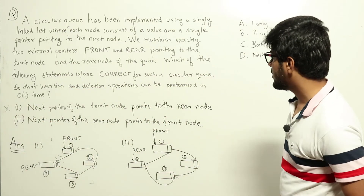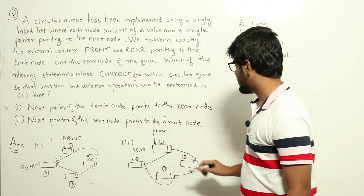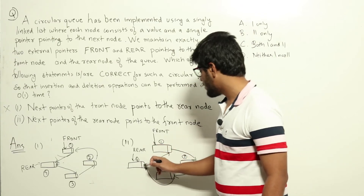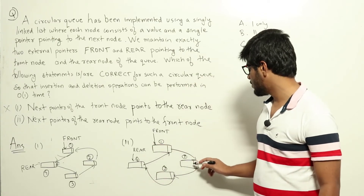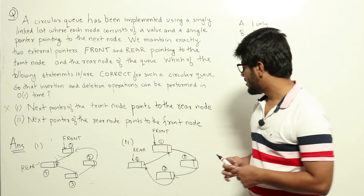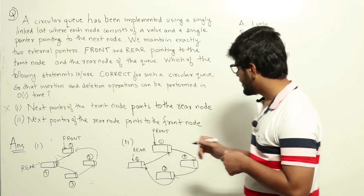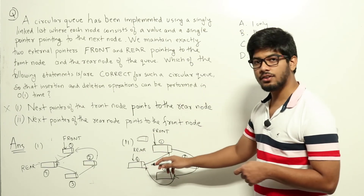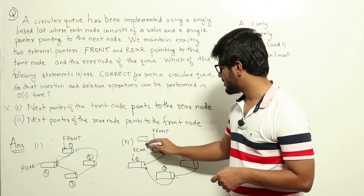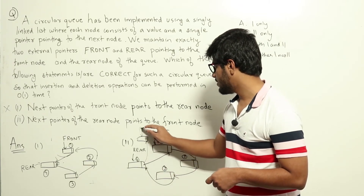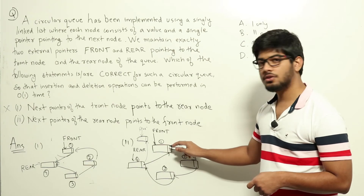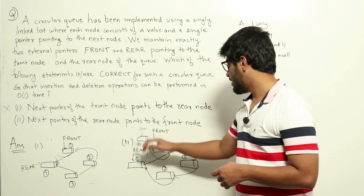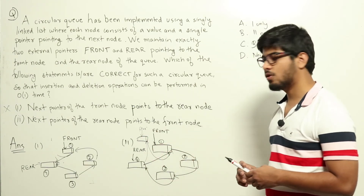Now let's look at statement 2: next pointer of the rear node points to the front node. Again we have four nodes. The rear node's next points to the front node, the front node's next points to node two, node two to node three, node three to node four (rear), and so on. For insertion, we create a new node, set the current rear's next to it, make it the new rear, and point its next to the front node — whose address we already know. Insertions clearly happen in O(1) time.